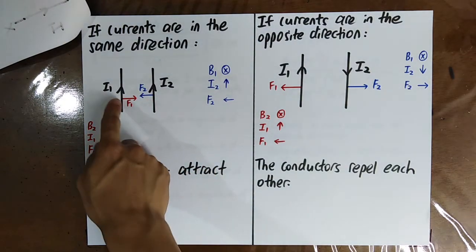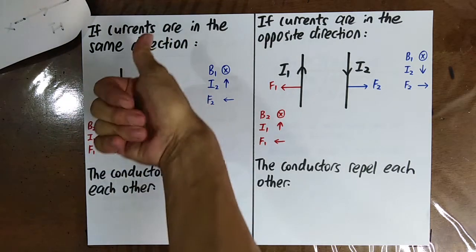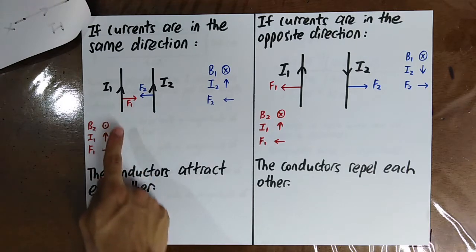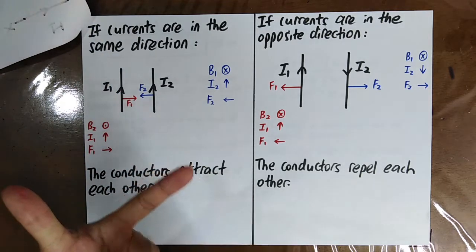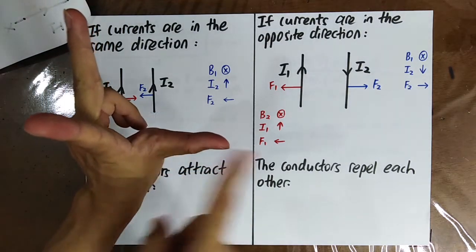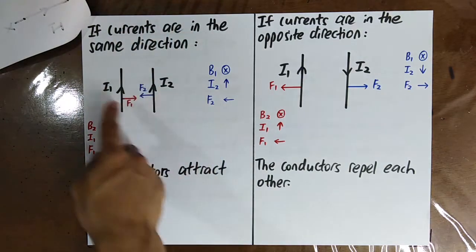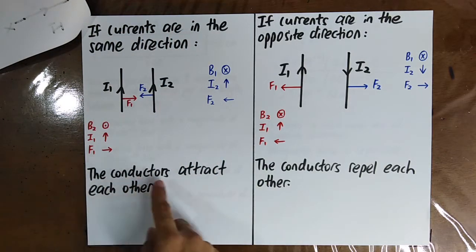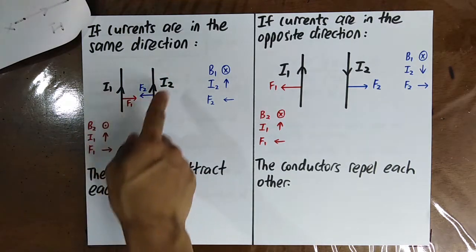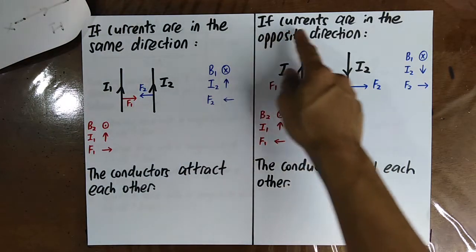Similarly, the magnetic field caused by I2 at the location of wire I1 is out of the page. With I1 directed upward and B out of the page, applying FBI gives the force F1 directed toward wire I2. Therefore, when the currents are in the same direction, both wires experience forces directed toward each other — the conductors attract.